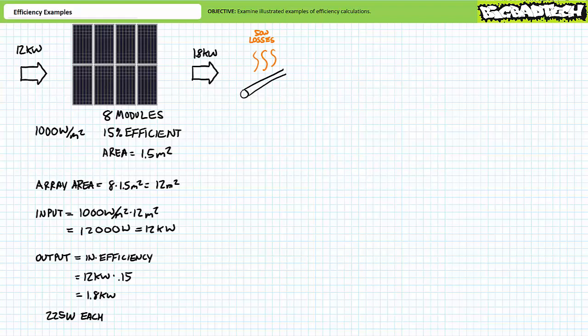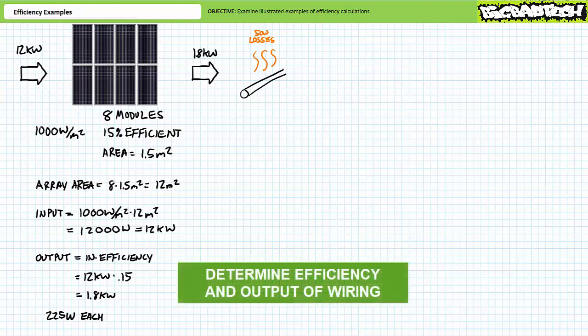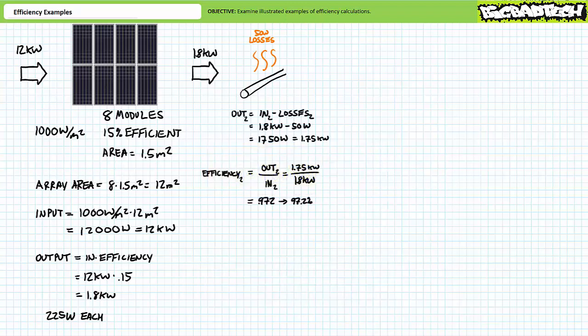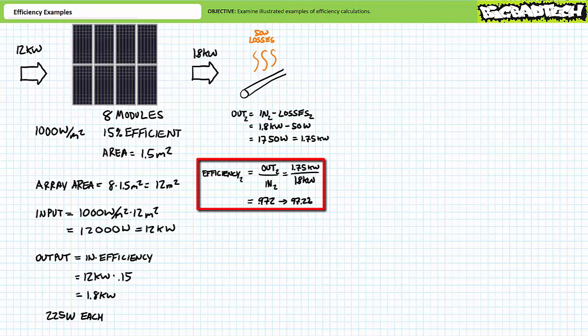Moving to the second stage: the wires from the array to the inverter dissipate 50 watts of heat losses. Output is input minus losses: 1.8 kilowatts minus 50 watts yields a usable power output of 1,750 watts or 1.75 kilowatts. Efficiency is output over input: 1,750 over 1,800 yields an efficiency of roughly 97.2 percent.